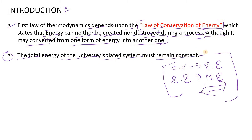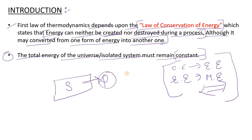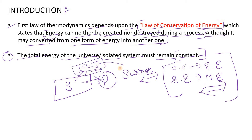For example, chemical energy can be converted into electrical energy, and electrical energy can be converted into magnetic or mechanical energy. So we cannot create or destroy energy during a process. The second definition is that the total energy of the universe or isolated system must remain constant. So if a system loses Q amount of heat, that heat will be gained by the surrounding — because the universe is system plus surrounding, the total energy remains constant.